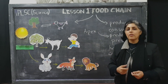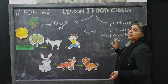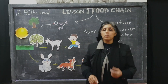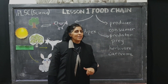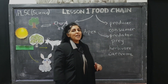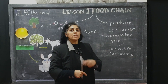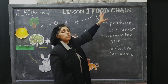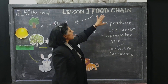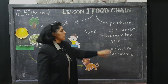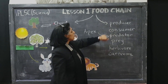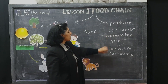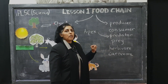Let's have a quick recap on the words that we have learned when we are talking about a food chain. Our vocabulary has increased today and we must remember these words and what they mean. When we are talking about a food chain, these are the words that we have come across today: producer, consumer, predator, prey, herbivore, carnivore.